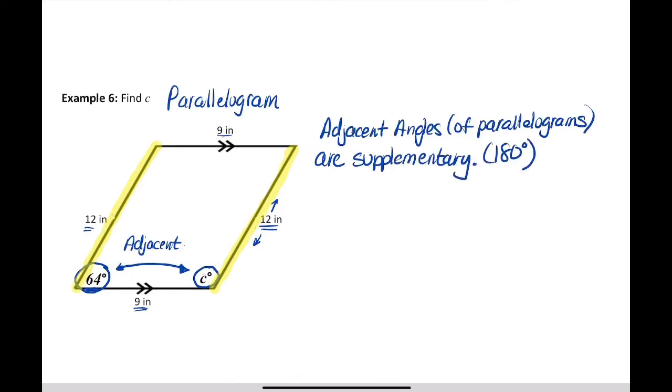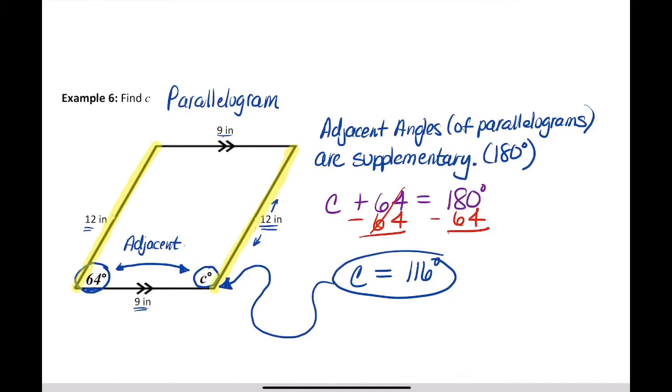It's okay for adjacent to be side to side in this case, because these sides right here are parallel. As long as they're adjacent between parallel sides, then we can call them adjacent and they can have those same properties. So adjacent angles, just like we stated before, adjacent angles of parallelograms are supplementary. So I'm going to set up a really simple equation again. We've got C plus 64 degrees is equal to 180 degrees, because that's what supplementary angles add up to. Take away 64 from both sides. So 180 minus 64 is 116 degrees. So there's angle C, 116.